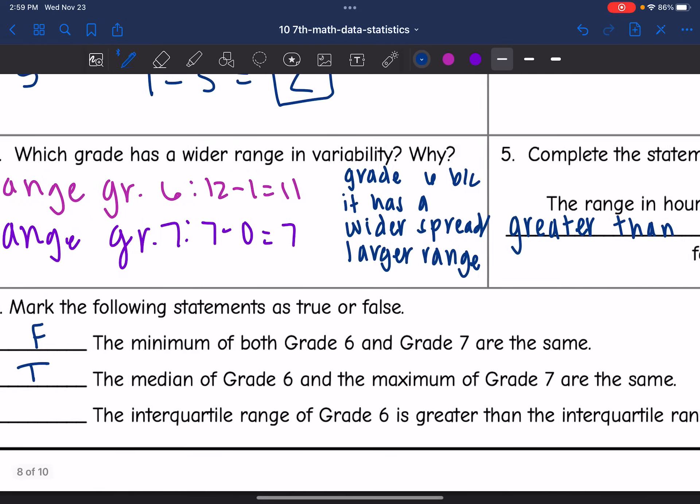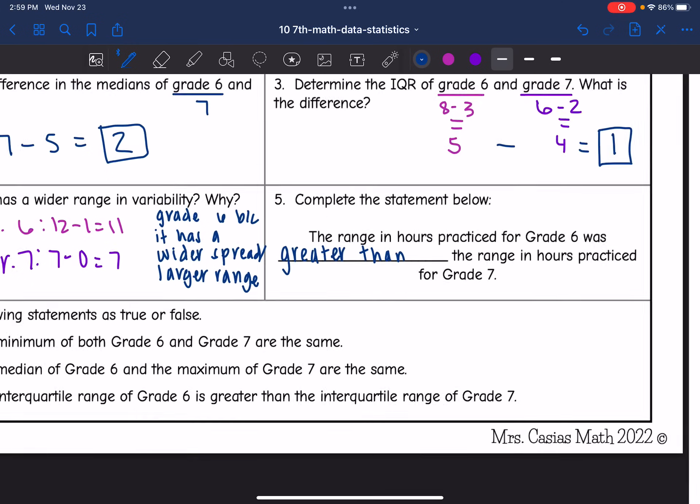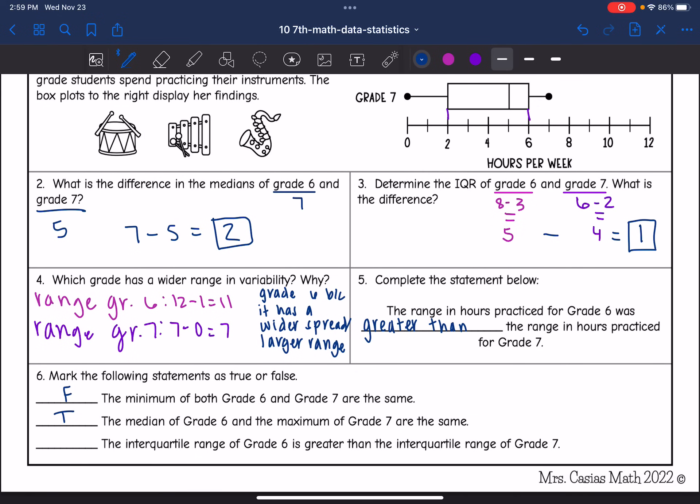And then the last one says the interquartile range of grade six is greater than the interquartile range of grade seven. So we determined the IQRs of both of them on number three. IQR of six was five and the IQR of seven was four. So this is true.